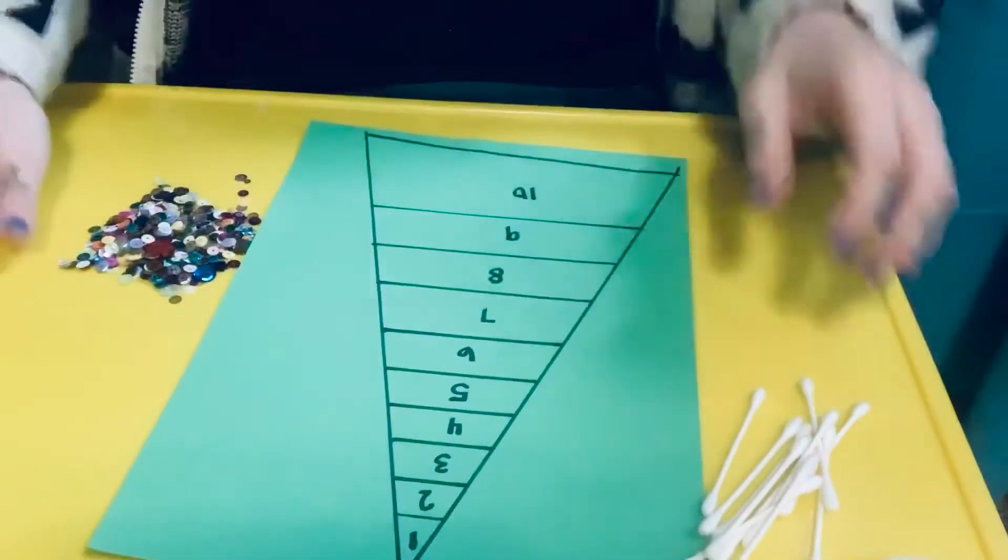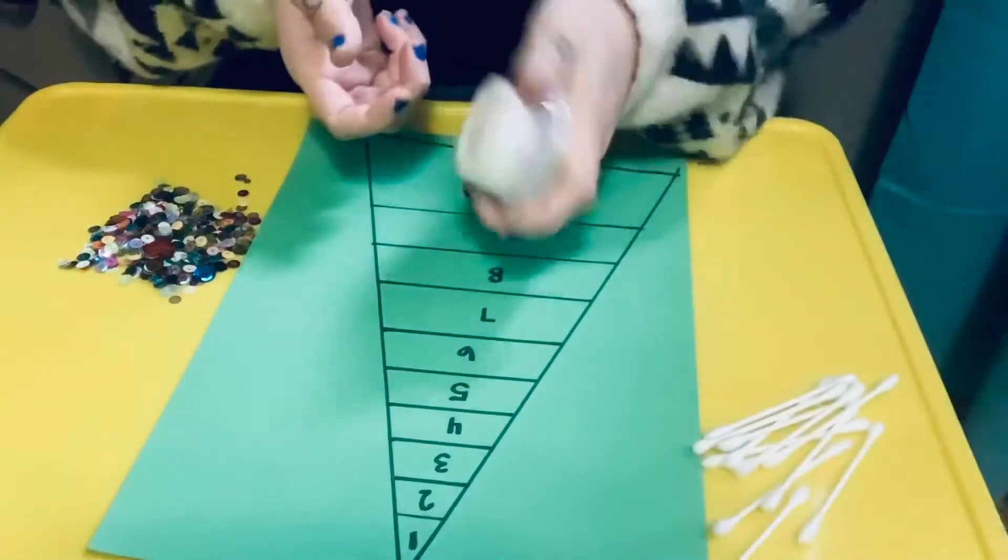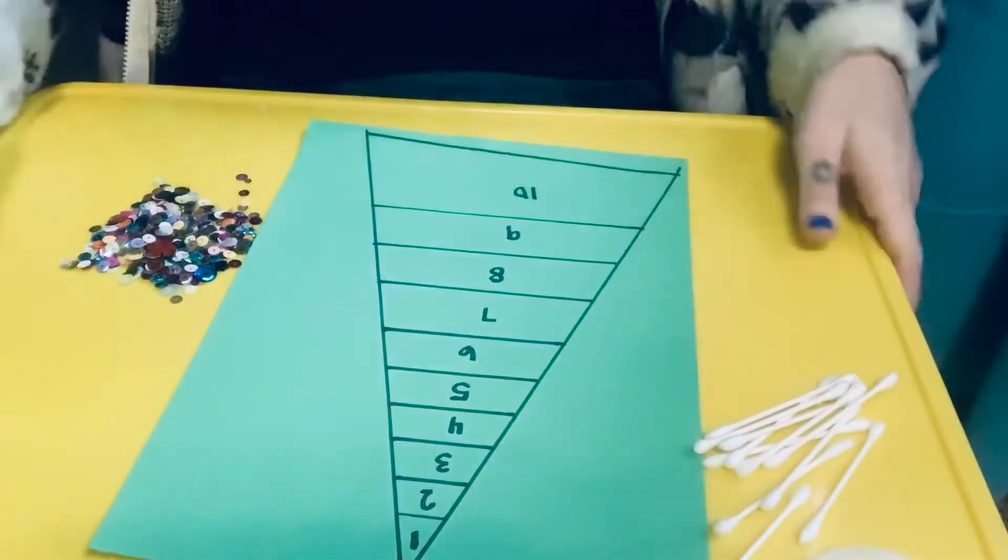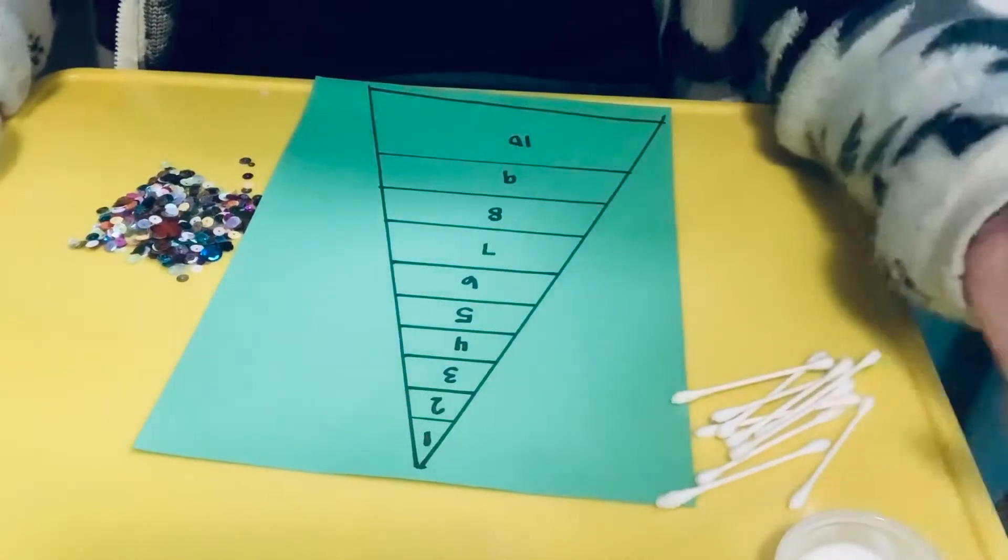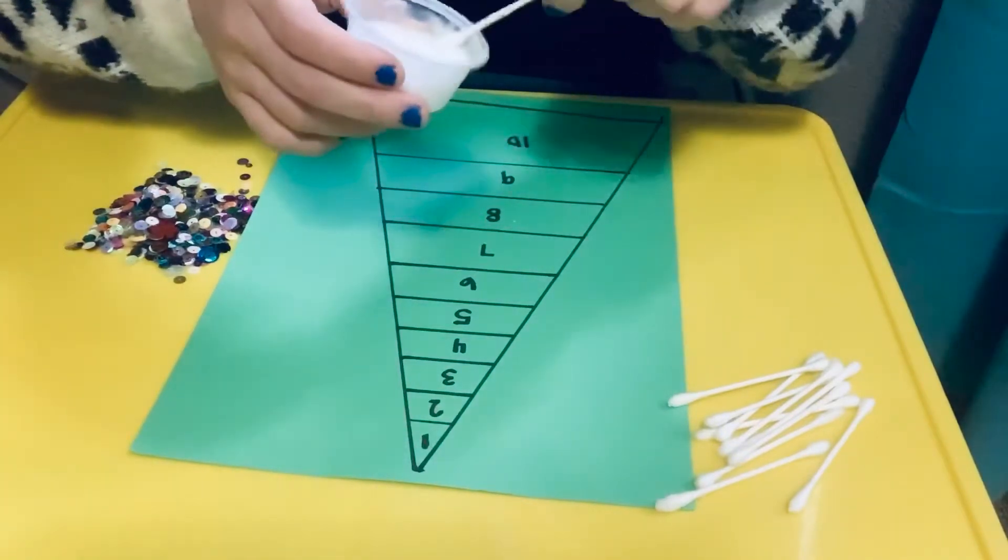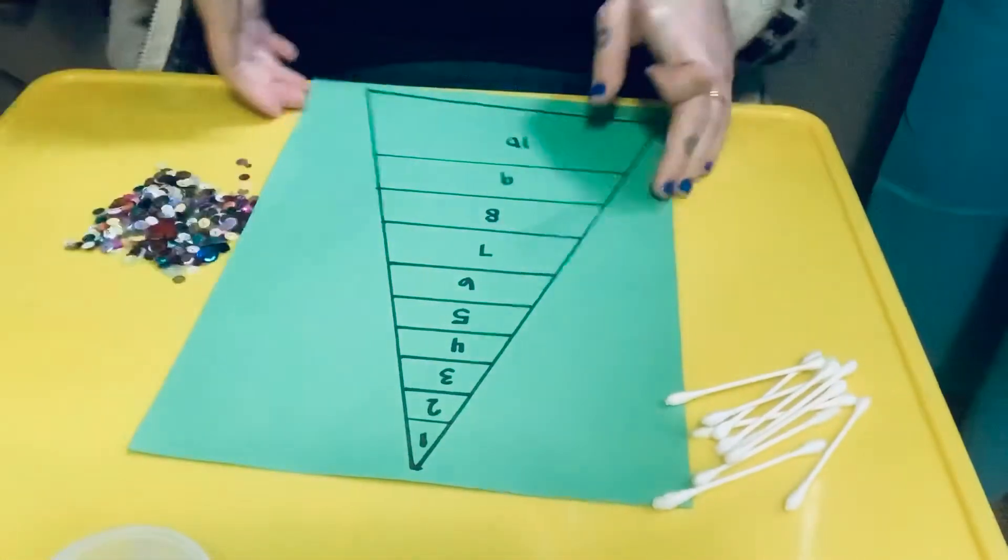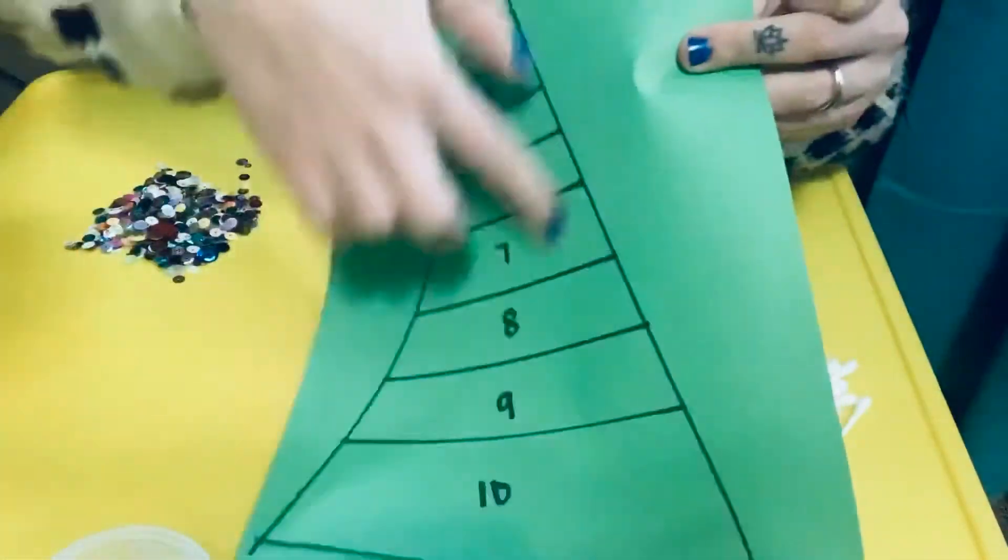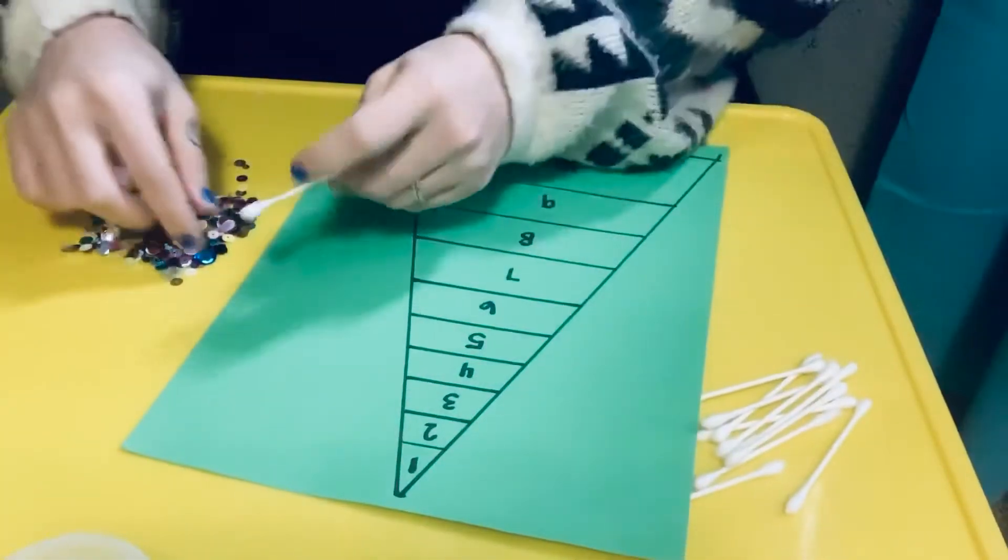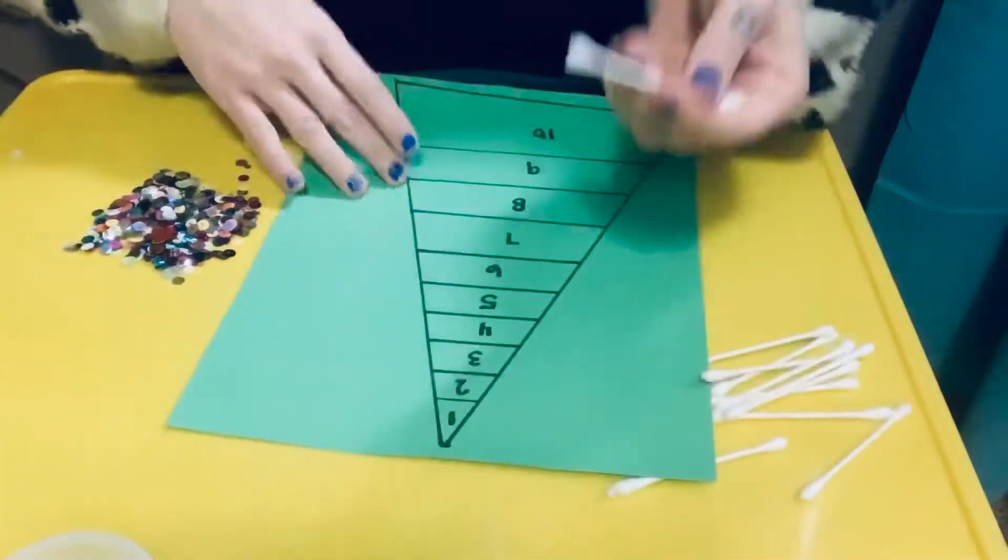I also have some q-tips and I have my wet glue. What Miss Tess is going to do is she's going to get her q-tip wet with some glue, and at the very top of my tree there's a number one. So I am going to just take one sequin and put it at the top of my tree.